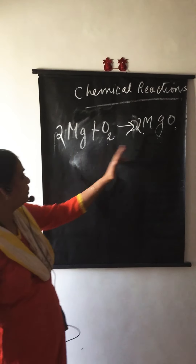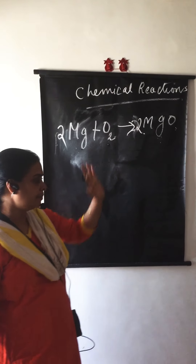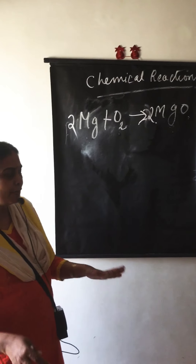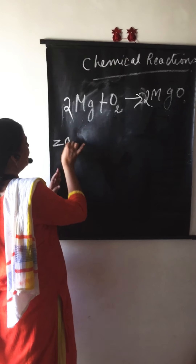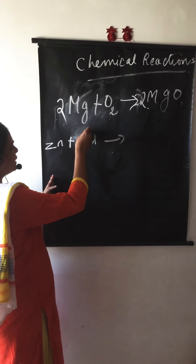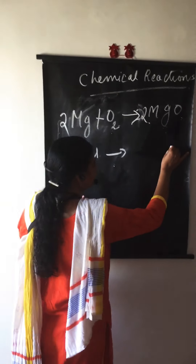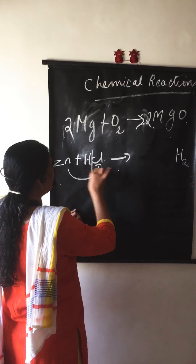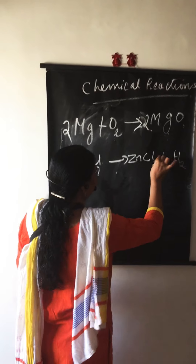Now let us look at the second reaction: zinc reacts with hydrochloric acid. Zn + HCl. The products are hydrogen gas and zinc chloride — ZnCl2 + H2. The equation is: Zn + HCl → ZnCl2 + H2.